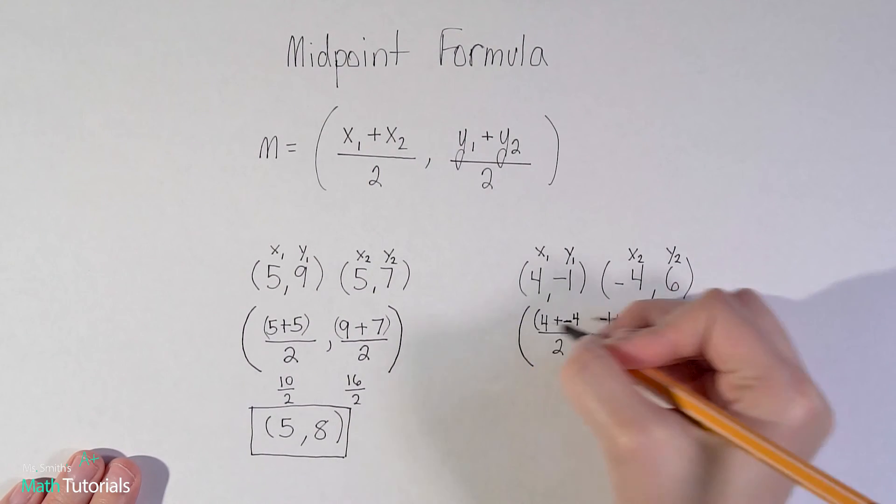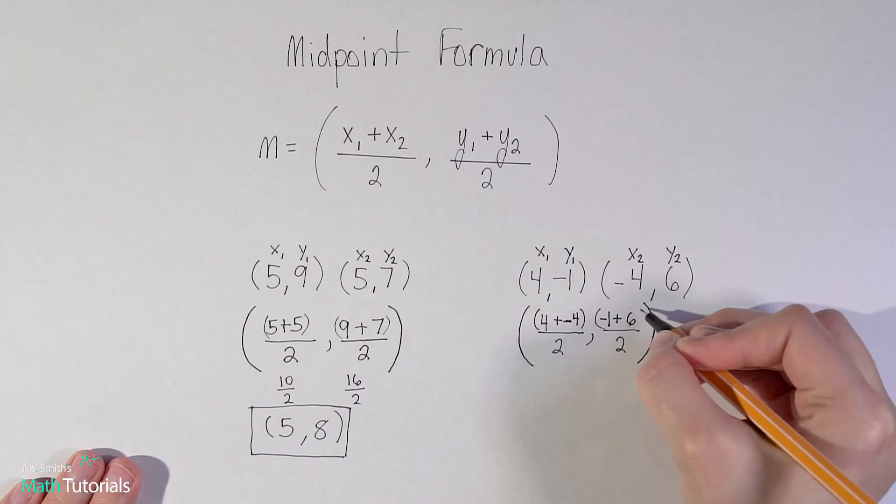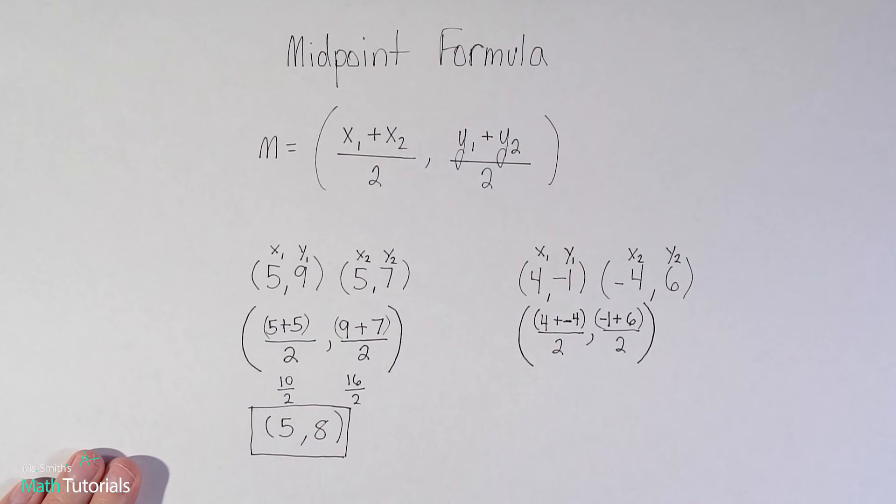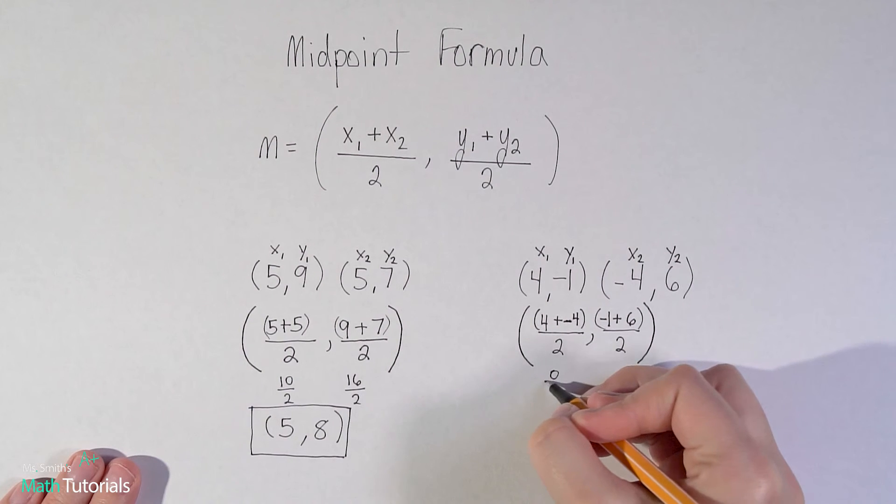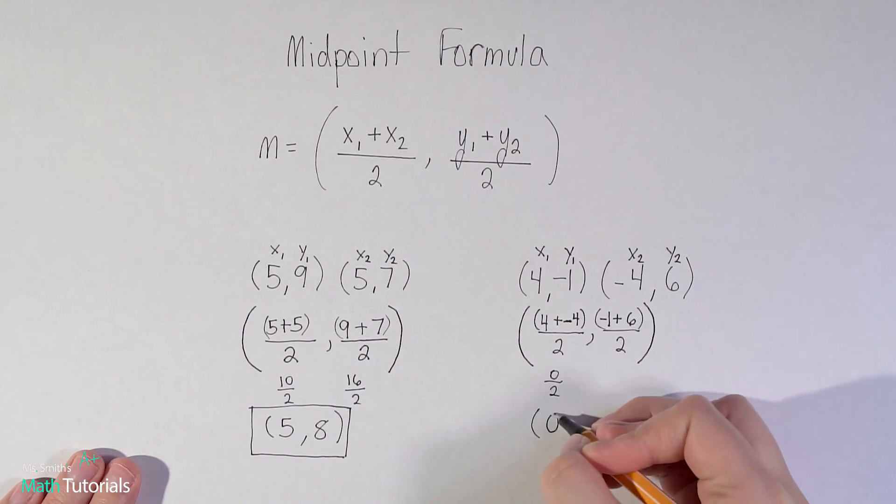Remember we're going to simplify the top first and then divide by 2. So 4 plus negative 4, which is the same thing as saying 4 minus 4, is 0. And 0 divided by 2 is 0. So I know my x value, it's 0.